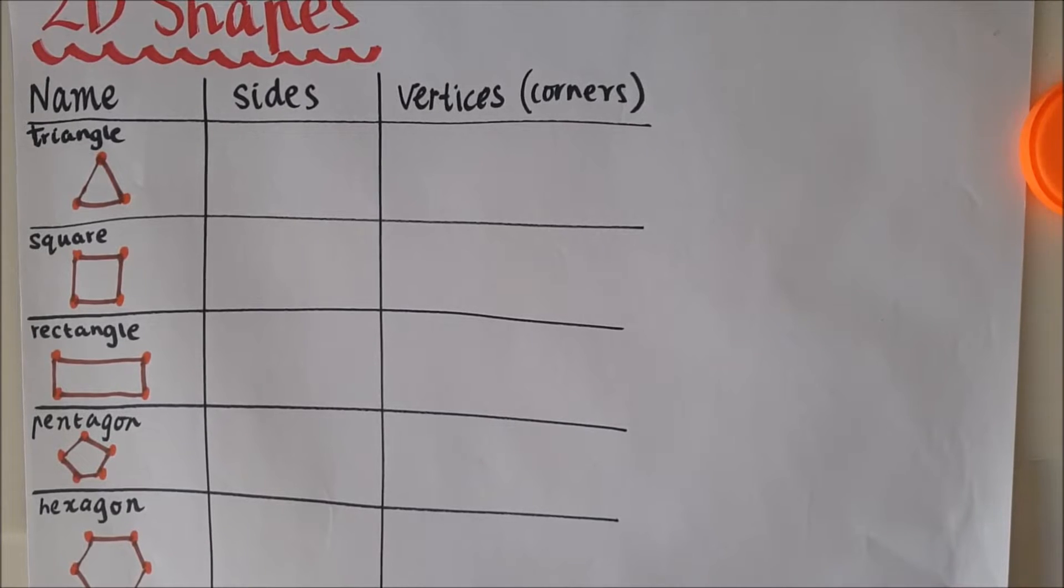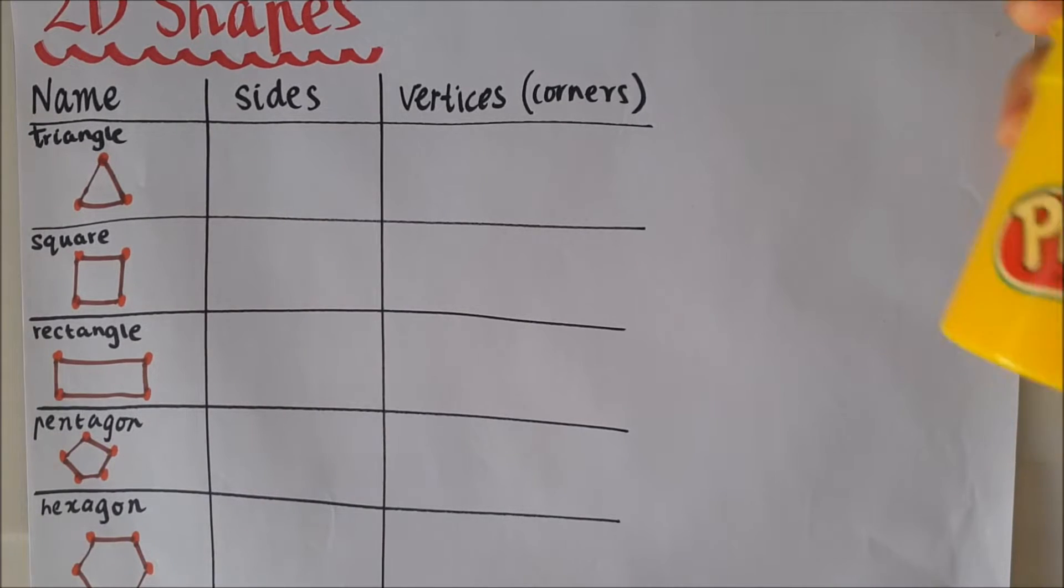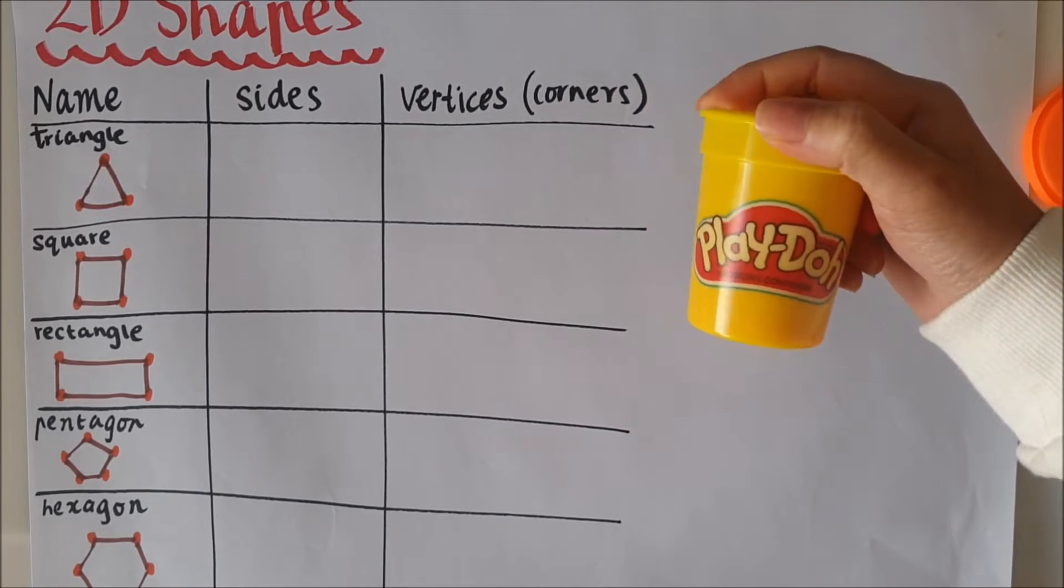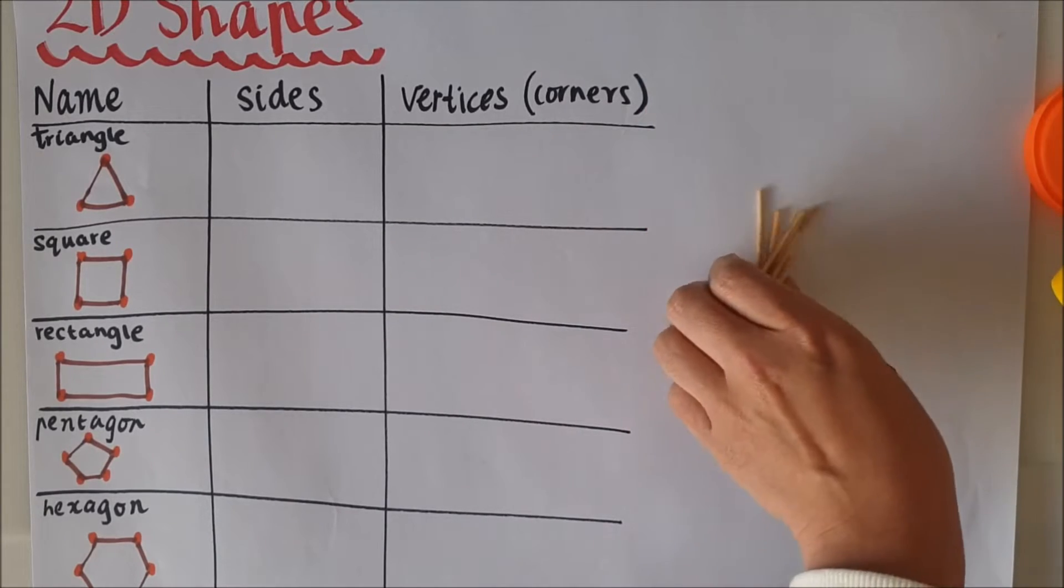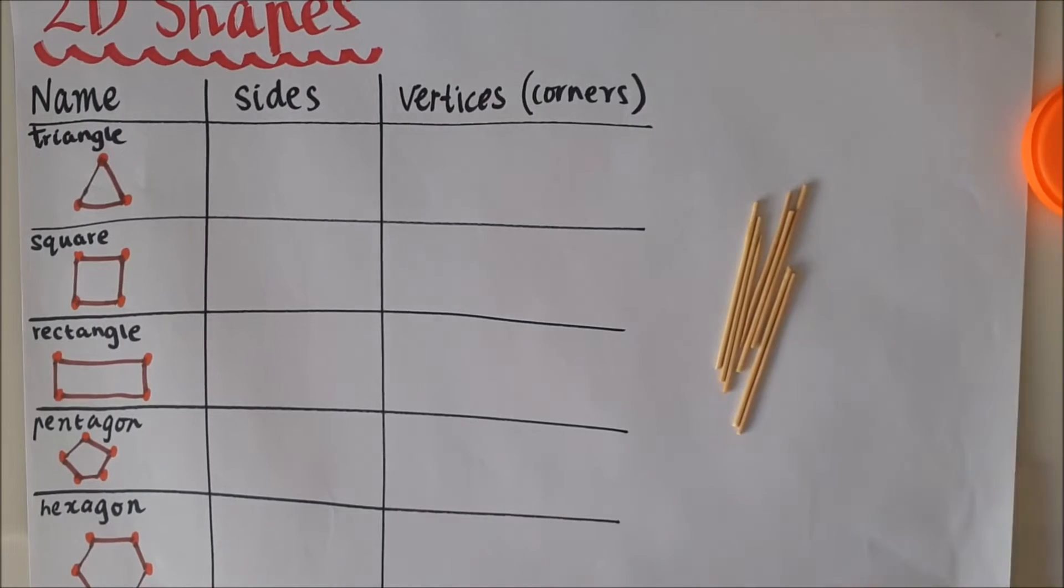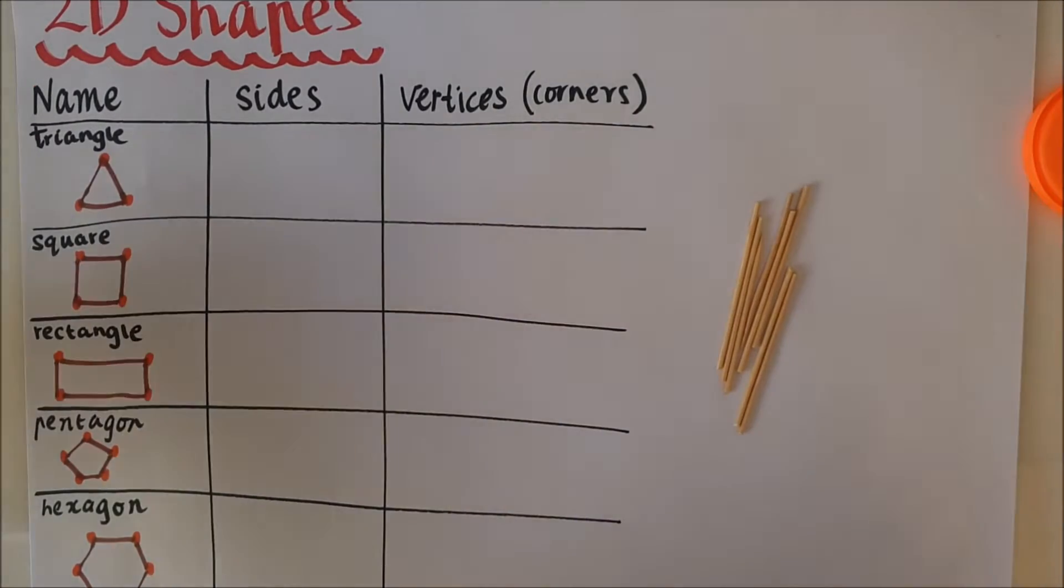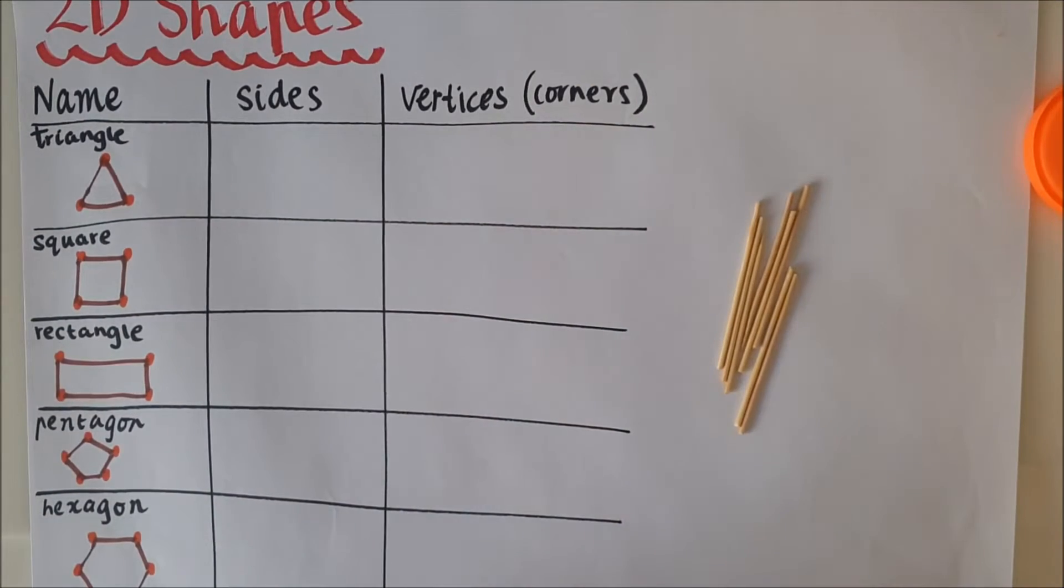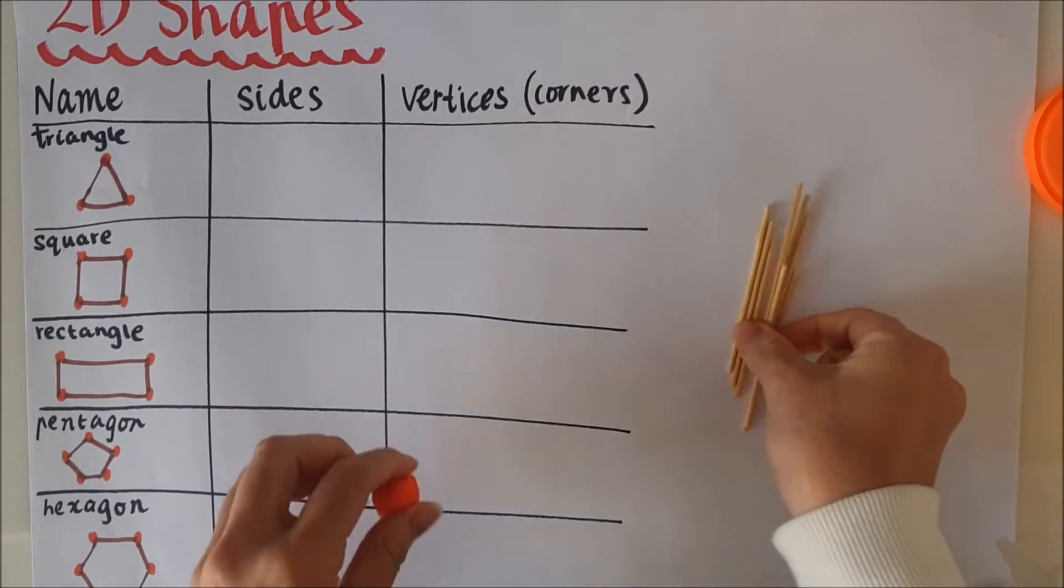So the sides and the vertices, and for today's activity we are going to use some play-doh and some toothpicks to create 2D shapes. So this will help us label the sides and the vertices.